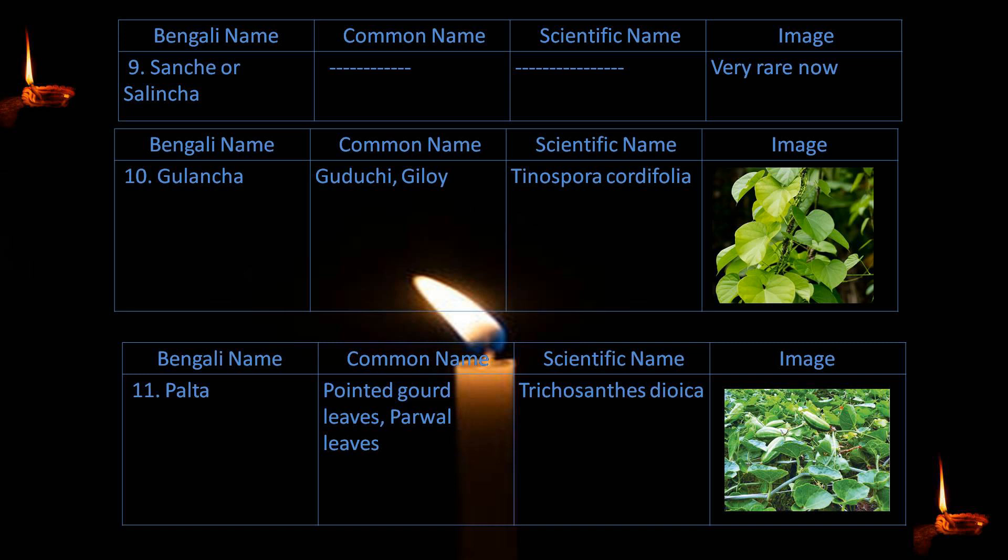11. Polta — pointed gourd leaf — Trichosanthes dioeca.